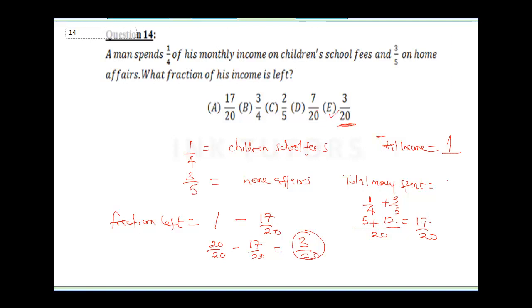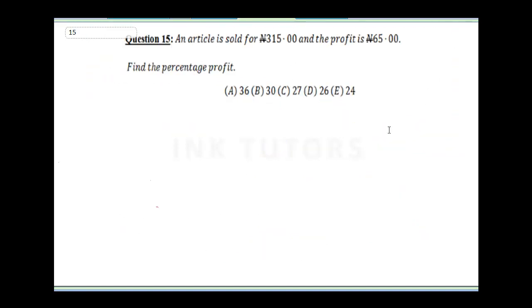Question 15: An article is sold for 315 naira and the profit is 65 naira. Find the percentage profit. Percentage profit = (profit ÷ cost price) × 100. We're given the profit but not the cost price, so we need to find it first.